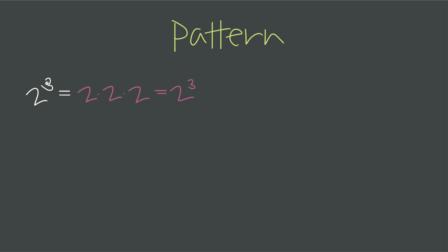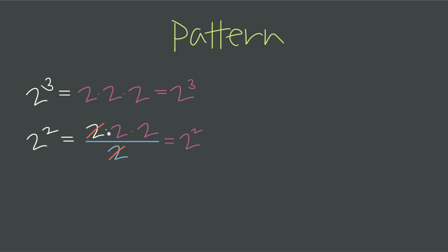One way we could get to 2 squared from here is by dividing through by 2. We could write 2 squared as 2 cubed — 2 times 2 times 2 — but then divided by 1 factor of 2. When we write it this way, we see that we get 1 factor of 2 to cancel from both the numerator and the denominator, leaving us with just 2 factors of 2, or 2 squared. It's a bit silly to write it this way, but what we're doing here is establishing a pattern.